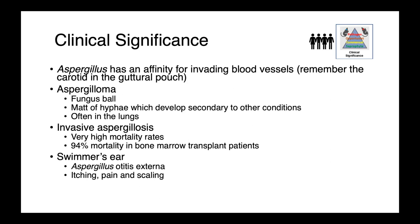In cases of aspergilloma, we have a fungal ball — this mat of hyphae — which develops most commonly secondary to other conditions and occurs most commonly in the lungs. Invasive aspergillosis is an incredibly serious infection associated with severely immunocompromised individuals, such as those who have received bone marrow transplants, and there is a really high mortality rate.